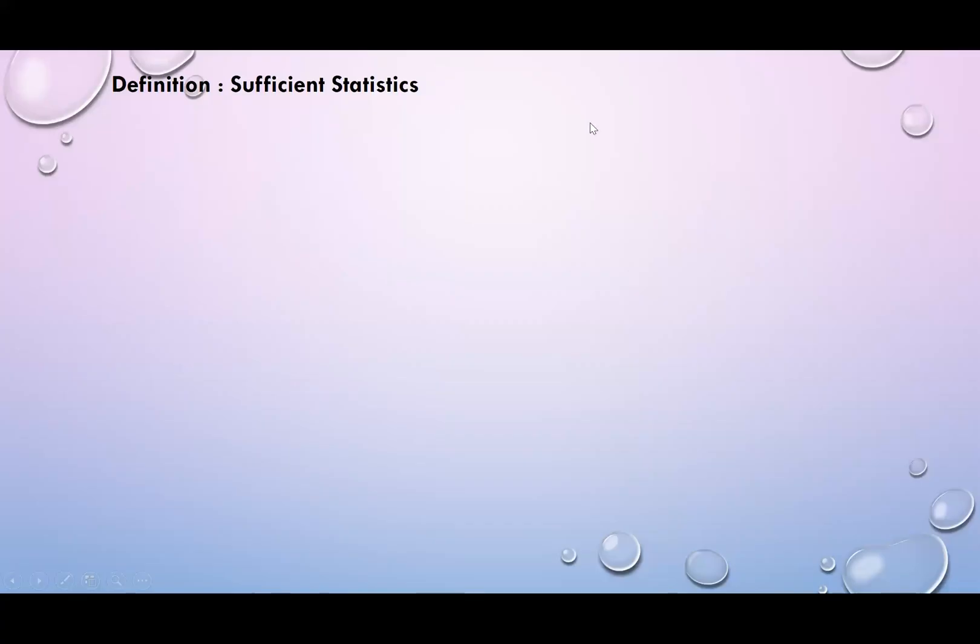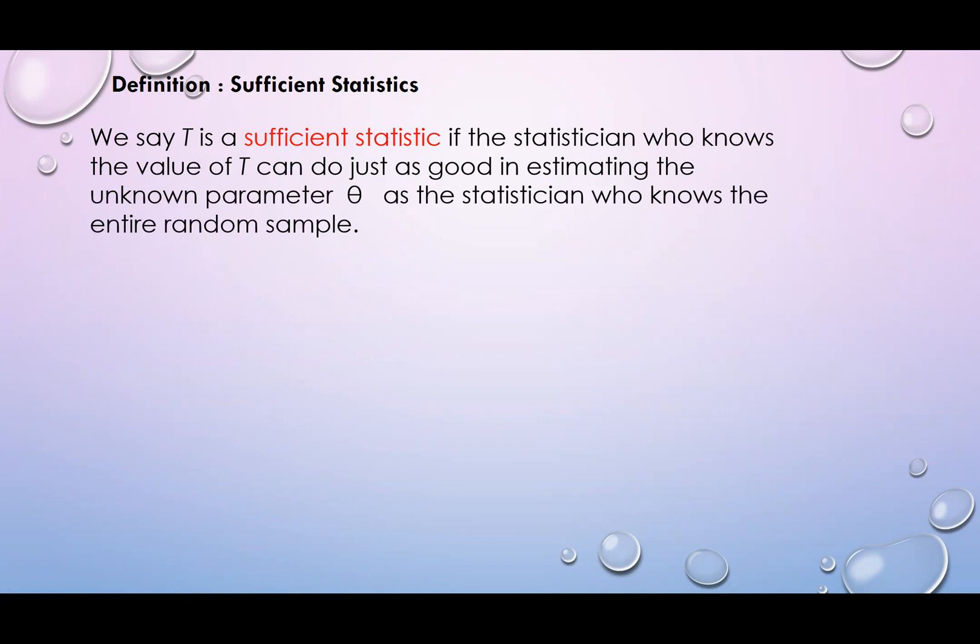So let us define sufficient statistic. We say T is a sufficient statistic if the statistician who knows the value of T can do just as good in estimating the unknown parameter theta as the statistician who knows the entire random sample. In this case, let us say T is your X bar. The entire random sample, that means you have X1, X2, X10. If you have all observations, you can compute your X bar using the formula. But if you have T, T can represent the entire data set.